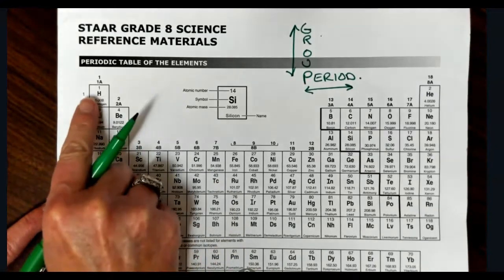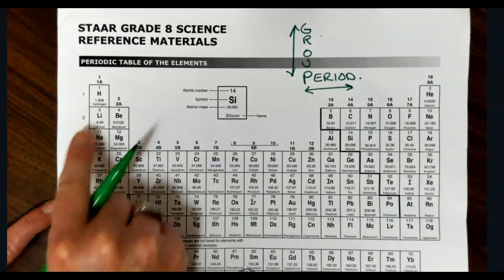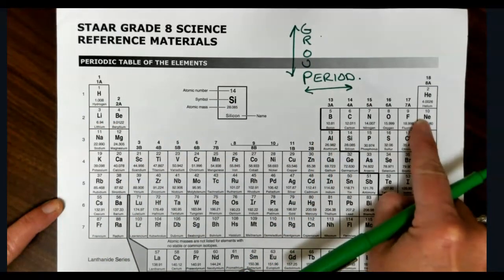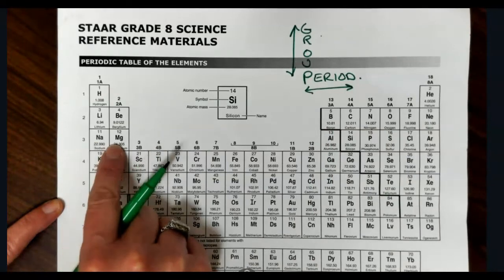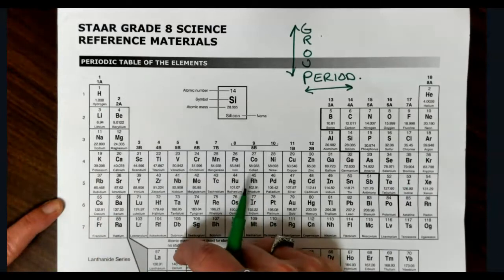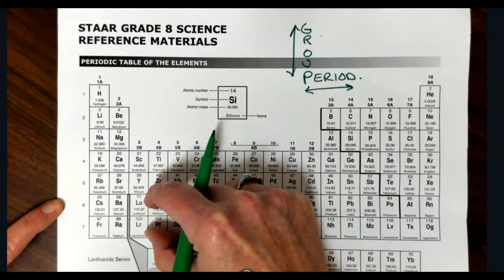Now don't forget, period one is hydrogen and helium. Period two is lithium, beryllium, skips over to boron, carbon, and so on. Period three, sodium, magnesium, skips over to aluminum and then continue on. The lanthanide and actinide would be periods six and seven.